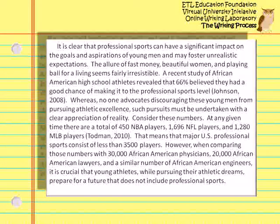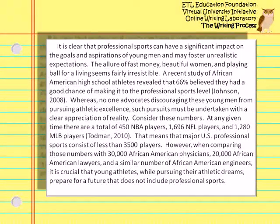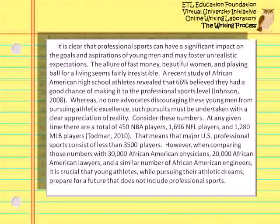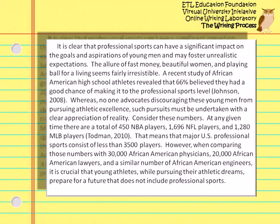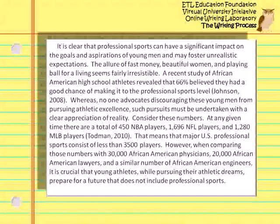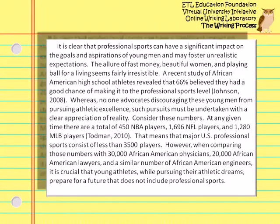Whereas no one advocates discouraging these young men from pursuing athletic excellence, such pursuits must be undertaken with a clear appreciation of reality. Consider these numbers: at any given time there are a total of 450 NBA players, 1,696 NFL players, and 1,200 MLB players. That means that major U.S. professional sports consist of less than 3,500 players. However, when comparing those numbers with 30,000 African American physicians, 20,000 African American lawyers, and a similar number of African American engineers, it is crucial that young athletes, while pursuing their athletic dreams, prepare for a future that does not include professional sports.